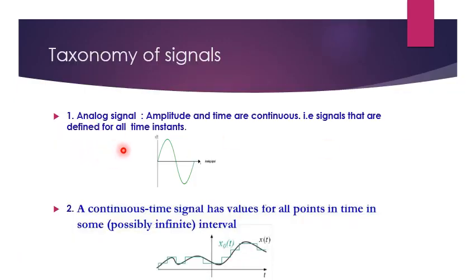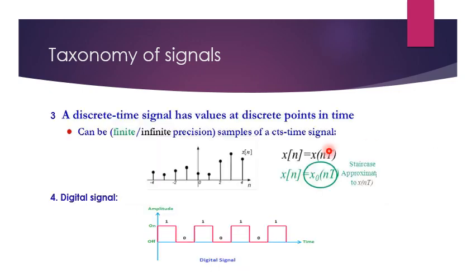An analog signal is defined for all instants of time. A continuous time signal has values for all points in time in a possibly infinite interval. A discrete time signal has values at discrete points in time — it can be finite or infinite precision samples of a continuous time signal, represented as x(n). A digital signal has both time and amplitude discretized.